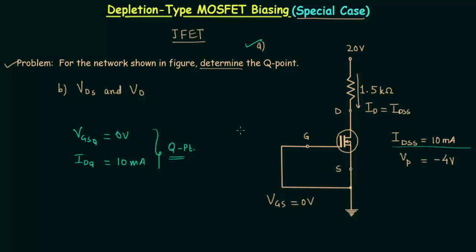Now we will move to part B, but first I will explain why this case is special. This case is special because it is very simple. We already know what VGSQ and IDQ are. IDSS is the saturated drain current and is given along with the device.